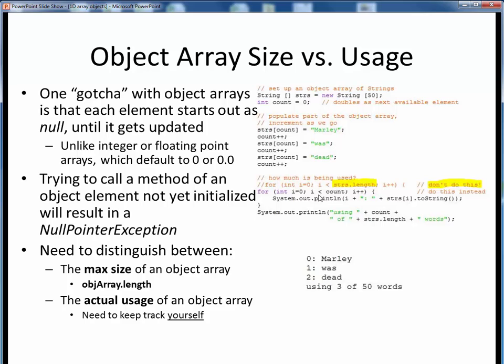What we want to do instead is shown here. We loop over only the used portion of the array and print each element as usual, and we have kept track of this count ourselves. So we loop over the first three elements only, printing out the array index and array element each time as usual.